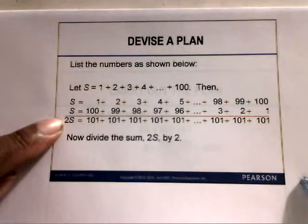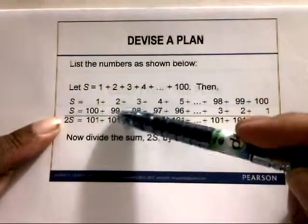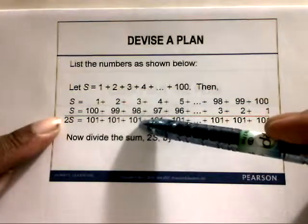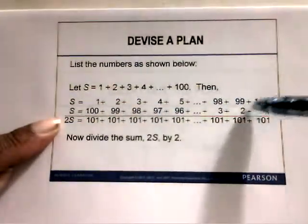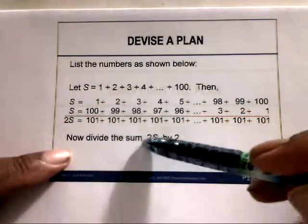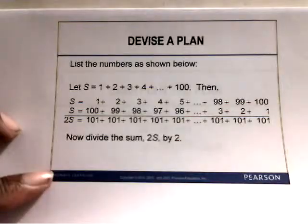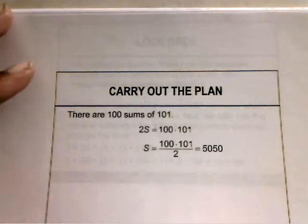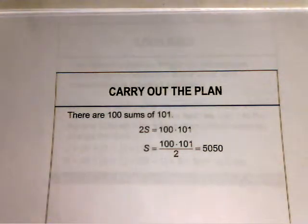S plus another S is 2S. We add each column one by one: 1 plus 100 is 101, 2 plus 99 is 101, 3 plus 98 is 101, and so on. The sum of each pair is 101. There are 100 such sums of 101, so 100 times 101 equals 2S, which gives 10,100. Divide that by 2, and you get 5,050. So the sum of the first 100 numbers is 5,050.